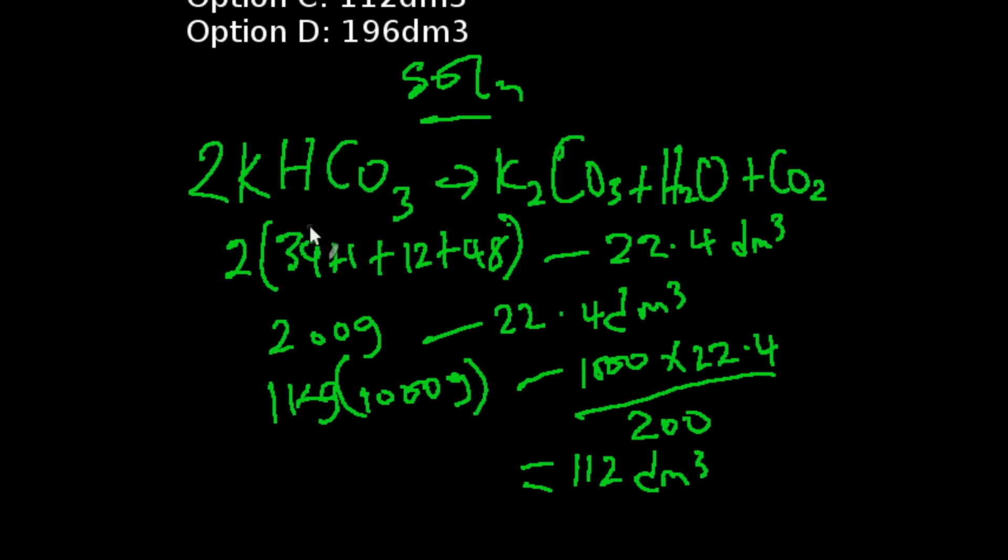So this is it: potassium hydrogen trioxocarbonate-4 being decomposed by heat to give us these products we have here, and carbon dioxide is one of the products. So we calculate the molar mass of this compound, potassium hydrogen trioxocarbonate-4, and that's going to give us 200.